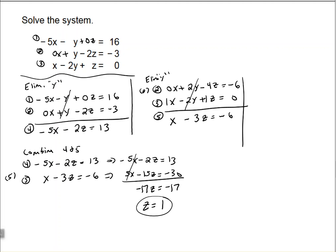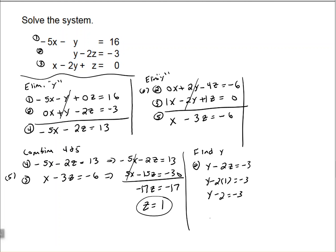We have one value. Now we need to find the other values. Going back to the original equations — in equation two we have just y and z. I know the value of z, so I can use that to find y. Equation two says y minus 2z equals negative 3. Replace z with 1 and solve: y minus 2 equals negative 3, so y equals negative 1.